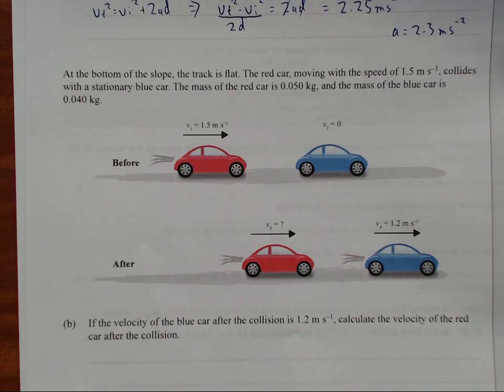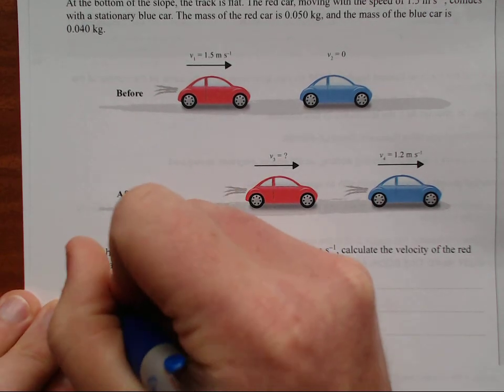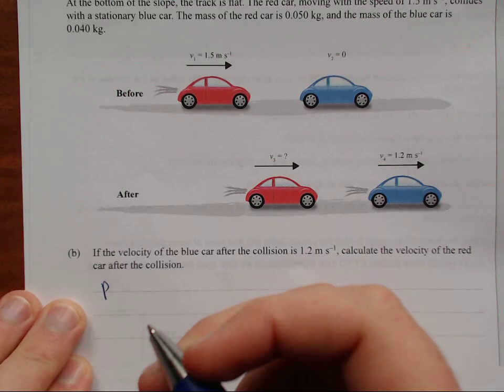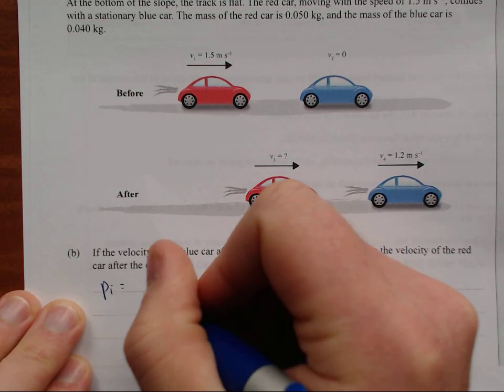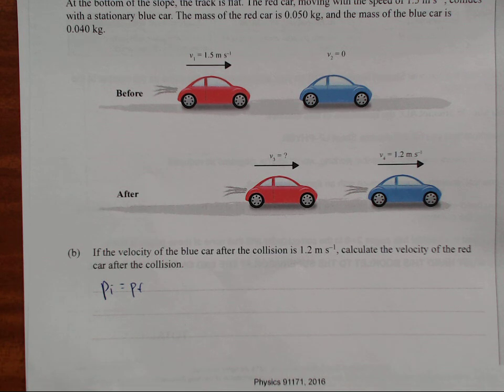So this is a momentum question. First and foremost, P is the letter or symbol for momentum. So the initial momentum is always equal to the final momentum, assuming no external forces. And there doesn't seem to be any external forces. It's probably neglecting friction.